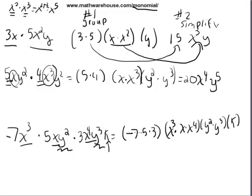And then simplify. Negative 7 times 5 times negative 3 is negative 105. And remember we're going to add all the exponents. x to the 3rd times x to the 1st times x to the 4th is x to the 8th. Y squared times y cubed is y to the 5th. And k.